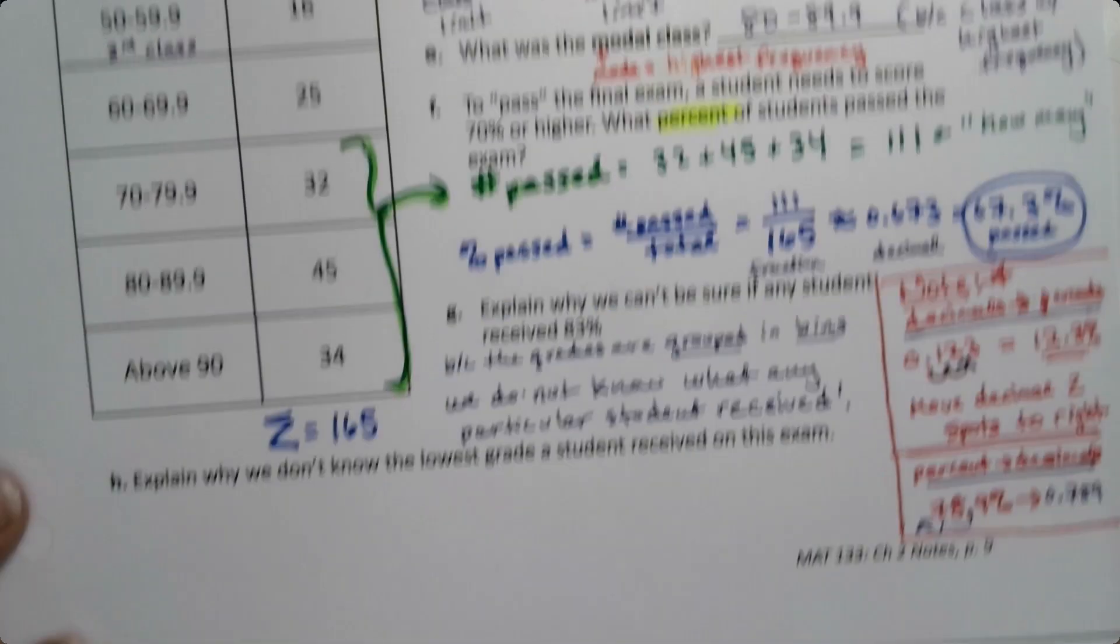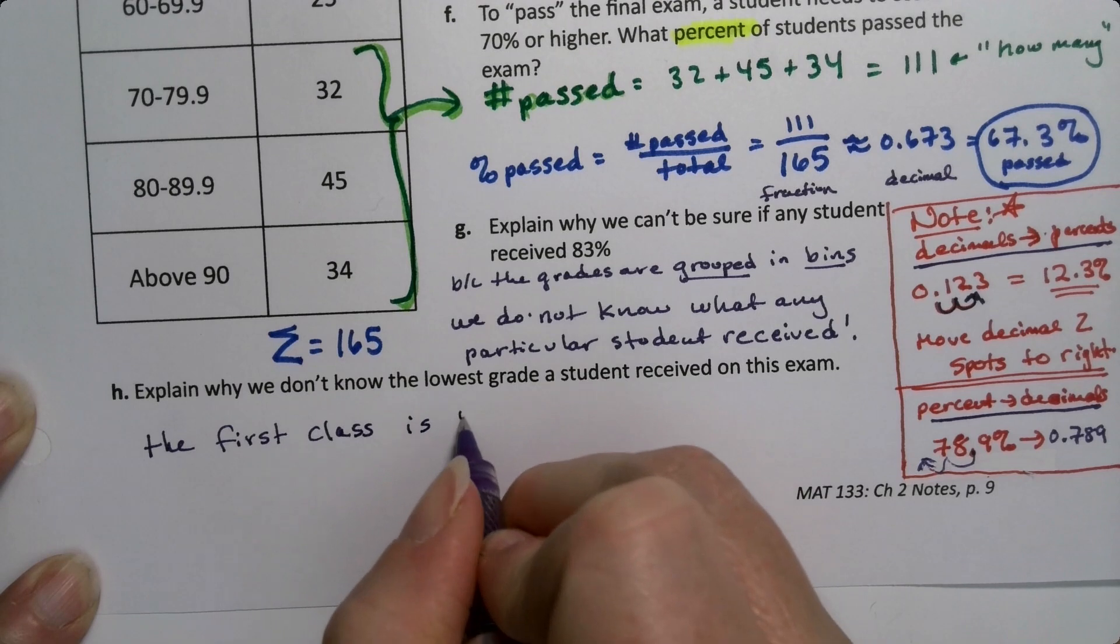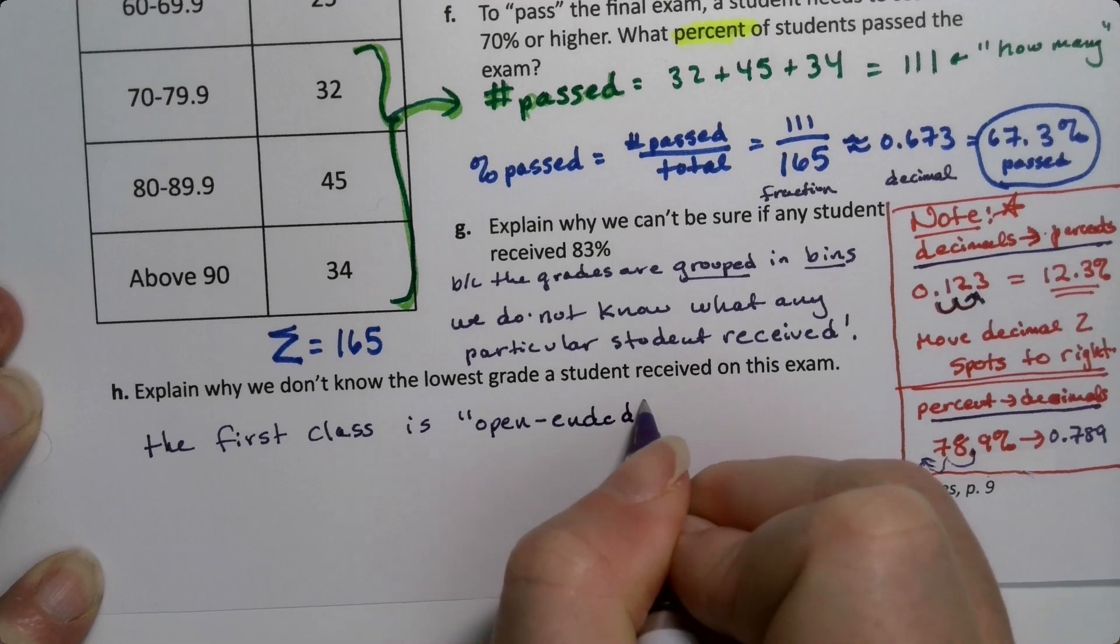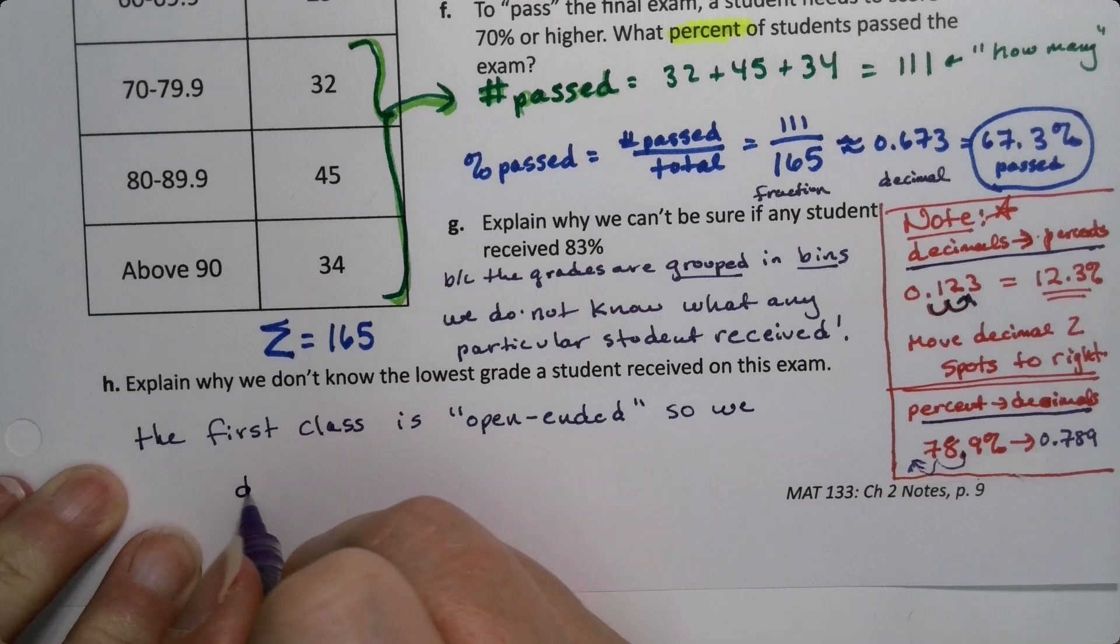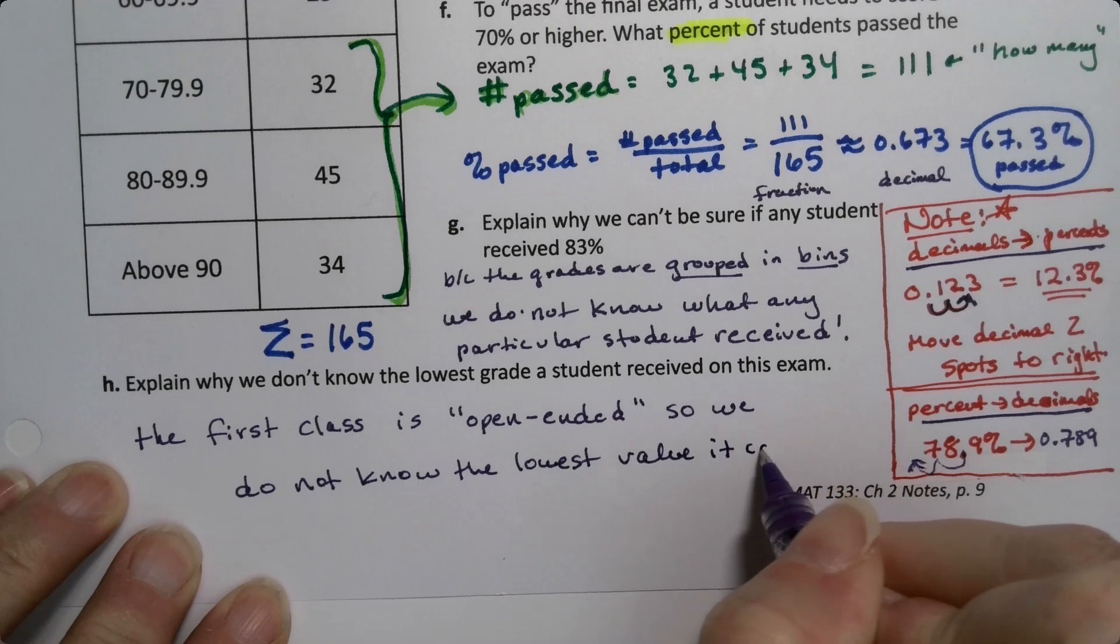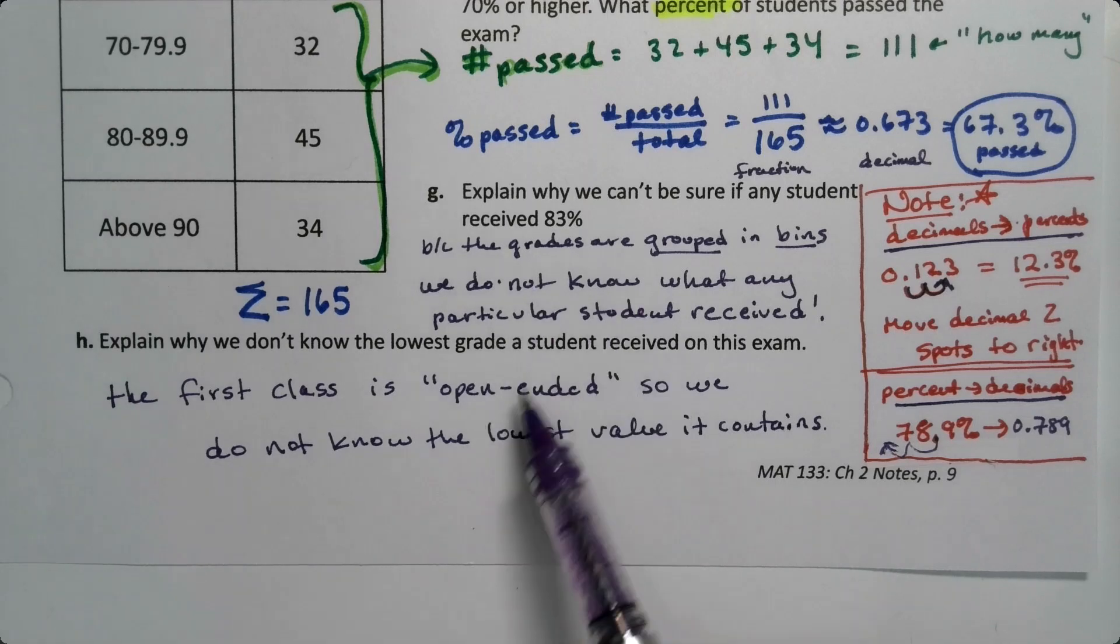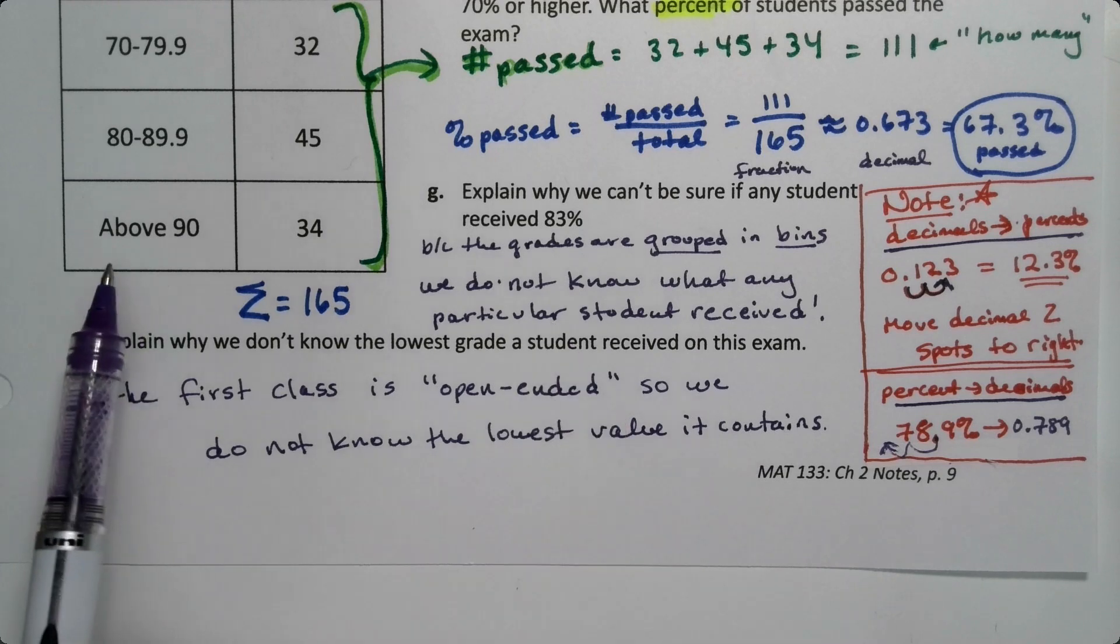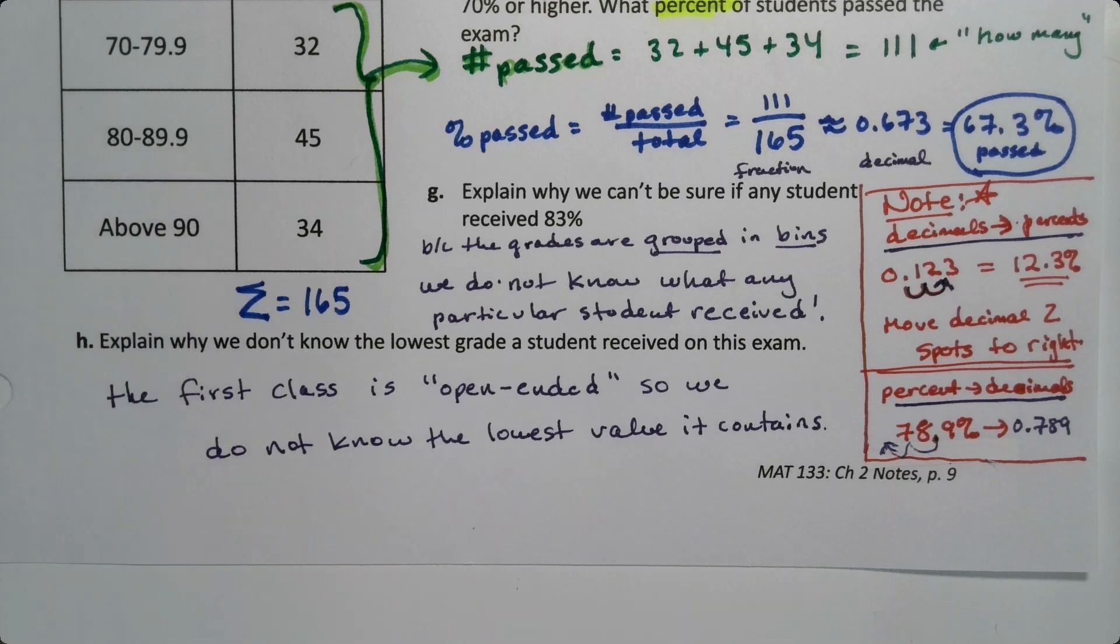And then why don't we know the lowest grade? The lowest grade, it's not quite that it's binned. It's actually because this is open-ended. We don't know the lowest value because the first class is open-ended. Although to be fair, even if I did put a lowest value in there, then I would have the problem that the bins are grouped and you don't know what the lowest value is. Basically there's two kinds of problems you can have: open-ended classes, you don't know where they end; and grouped bin classes, you don't know what the individual scores were.